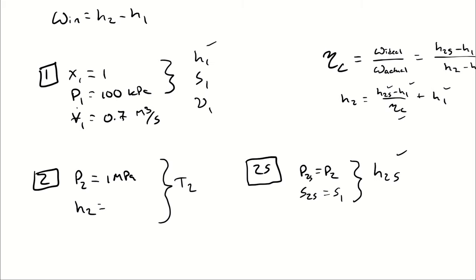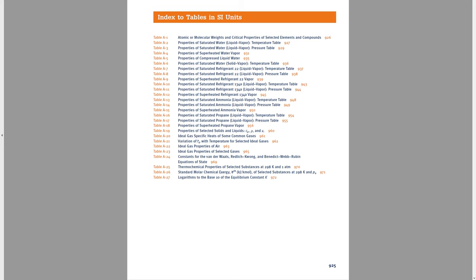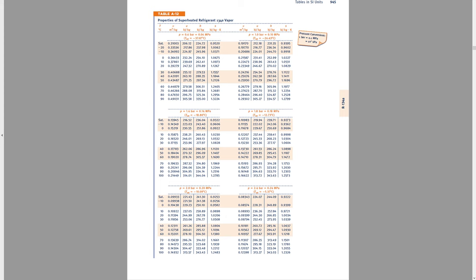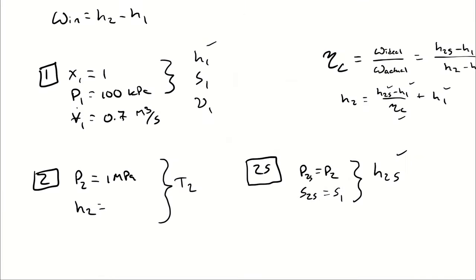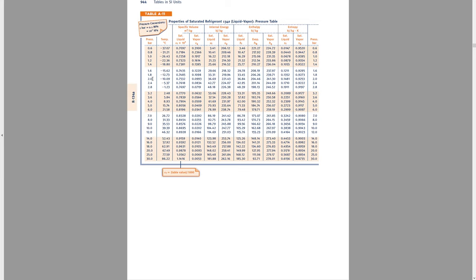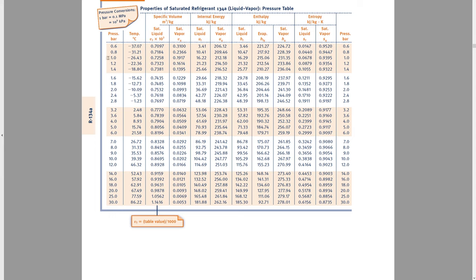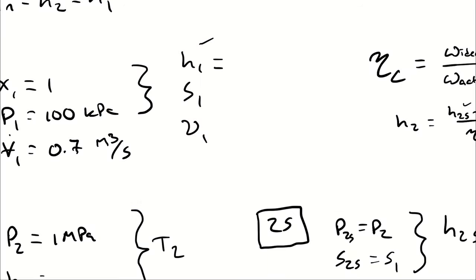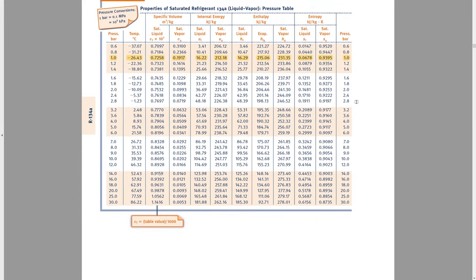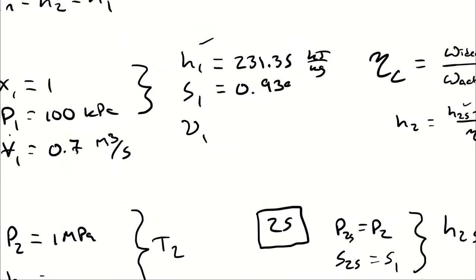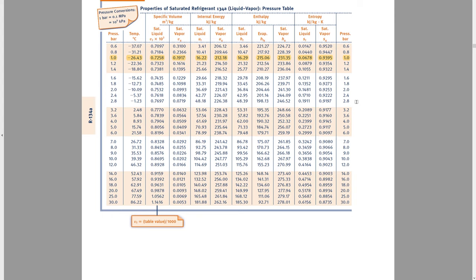Okay, now, H1 is going to be the enthalpy at a quality of 1 and a pressure of 100 kilopascals. For that, we'll go into our tables. Don't forget that we have R134A, not water. So, if I go into the R134A tables, and I want saturation by pressure, because I have a pressure of 100 kilopascals, which is 1 bar. So, the row corresponding to my state 1 is this one. So, at state 1, my enthalpy is HG at 1 bar, which is 231.35. My S1 is SG at 1 bar, which is 0.9395. And my V1 is VG at 1 bar, which is 0.1917.